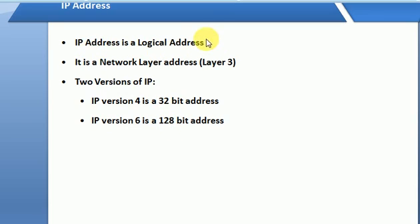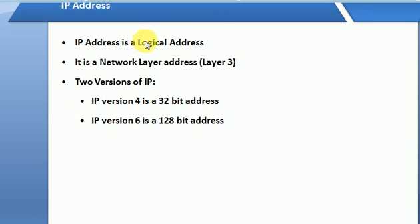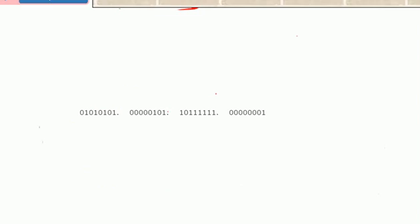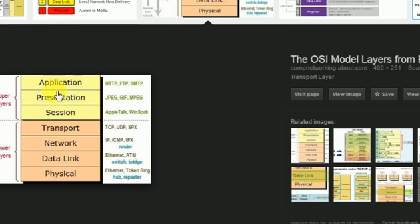IP Address is a logical address. A logical address is different from a physical address. Logical address is used in Layer 3 — the network layer. IP Address is used in Layer 3, which refers to the OSI Model. If we refer to the OSI Model, there are 7 layers.